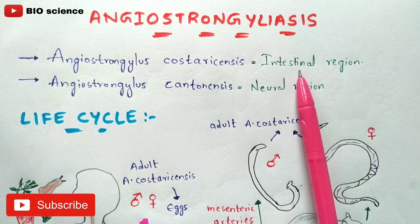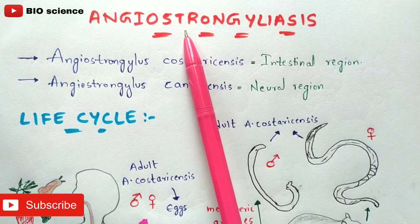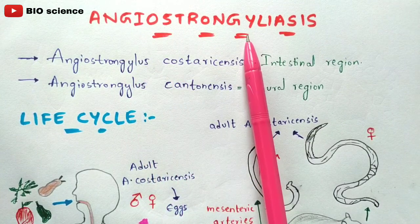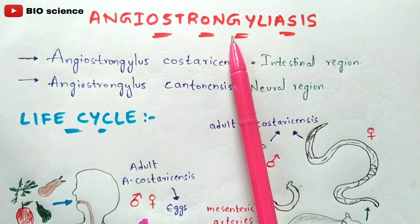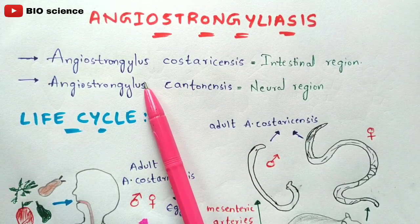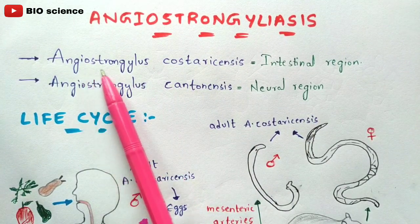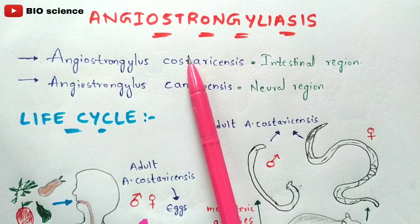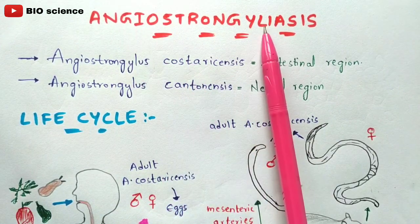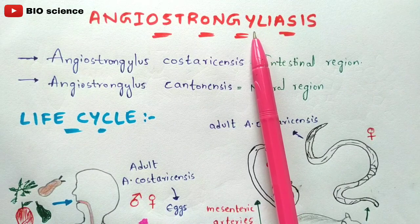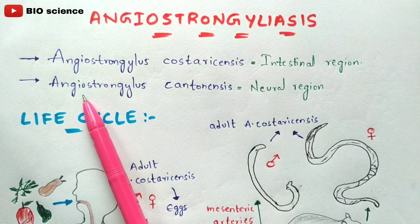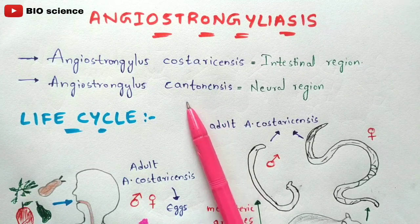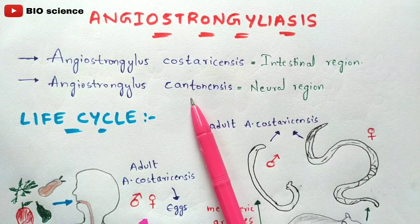The main cause behind this disease called angiostrongyliasis involves two species of parasites. The first species is Angiostrongylus costaricensis and the second species is Angiostrongylus cantonensis. These are the two parasitic species responsible for causing this disease.